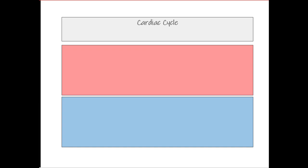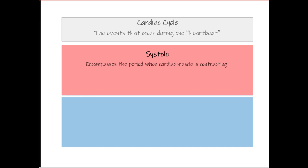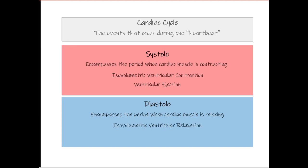Two additional terms divide the cardiac cycle into two main categories. The first is systole, which is when the ventricular muscle is contracting. This includes the phase of isovolumetric ventricular contraction as well as ventricular ejection. The second term is diastole, which encompasses the period when the ventricle is relaxing — including isovolumetric ventricular relaxation and ventricular filling.